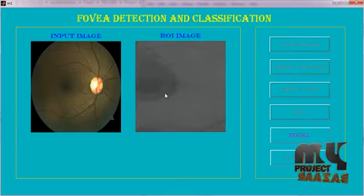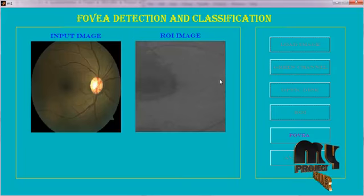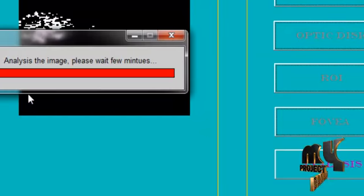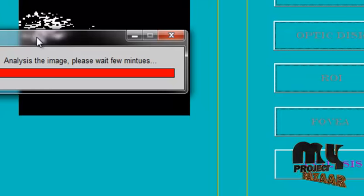Then we go to the ROI or region of interest. We go nearest to the fovea. And then we detect the fovea from the ROI image. It is the fovea. Then analyze that fovea to check if it is affected at normal level or moderate level or severe level. Then we go to the analyze process. It takes a few minutes for analyzing the image. The waiting bar will be opened. And then the given image is normal.